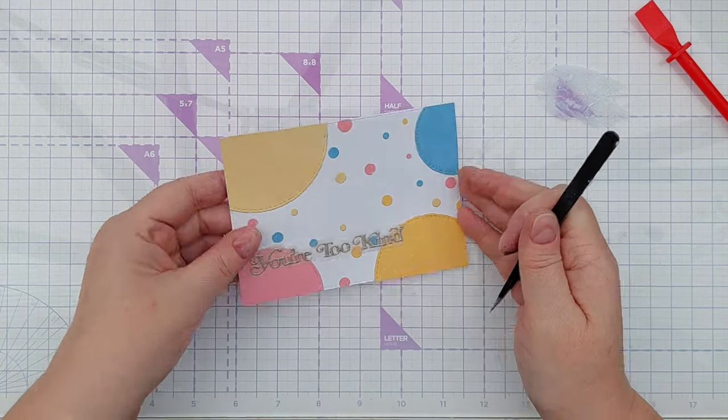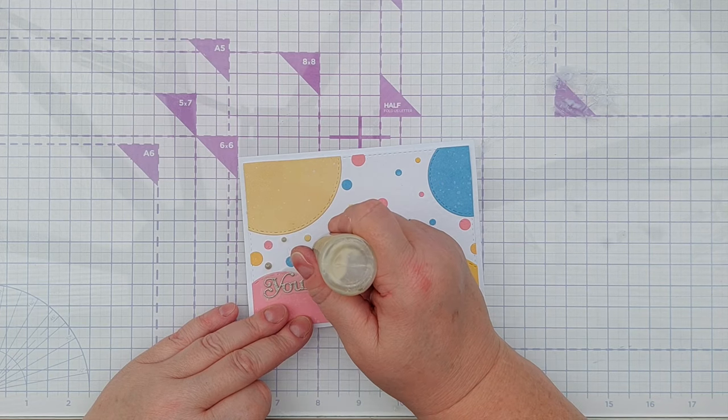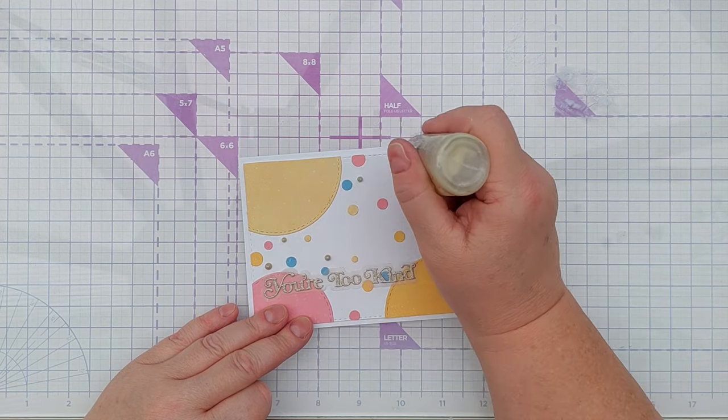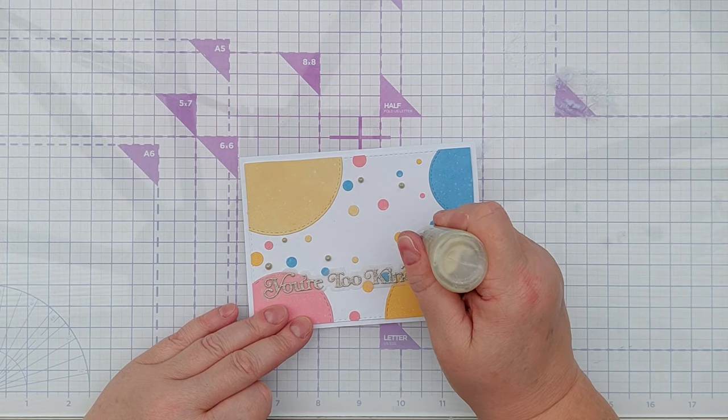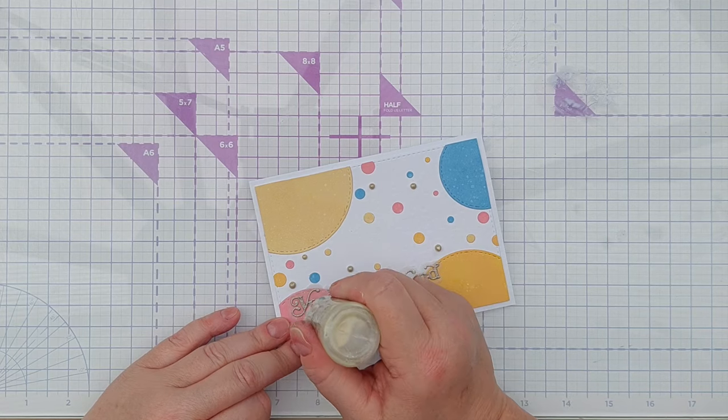After that was all stuck down securely, I used some tape runner to glue the panel to the front of my card, and to bring in a little bit more bling and some dimension I dotted some gold nouveau drops around.